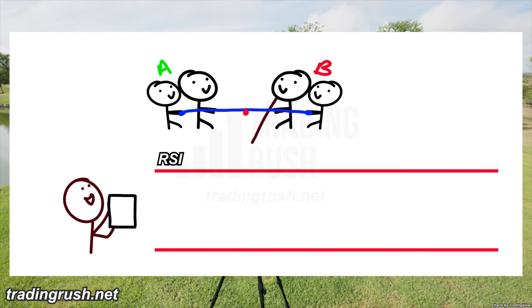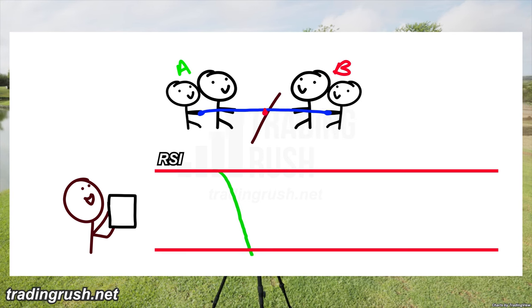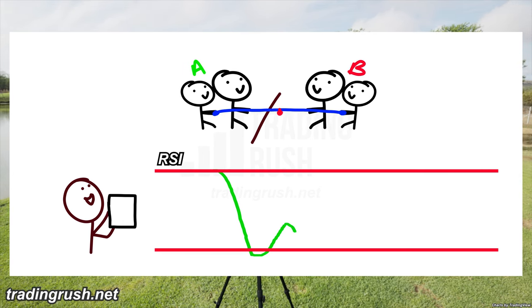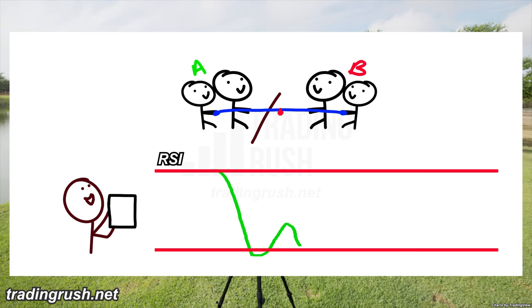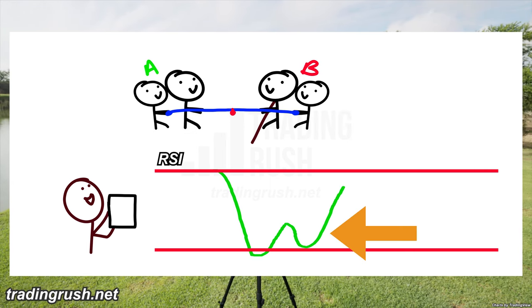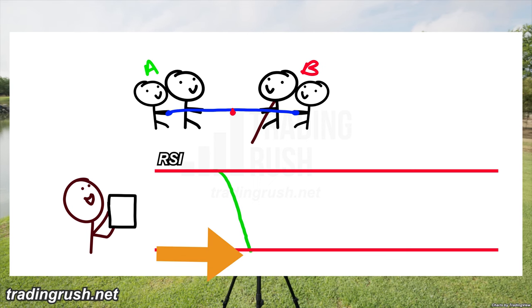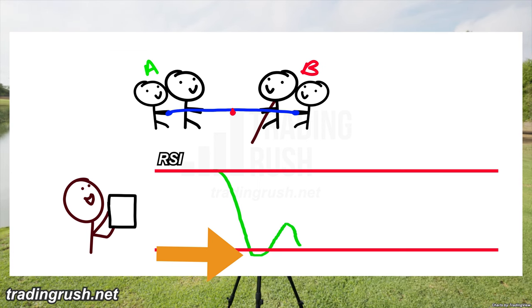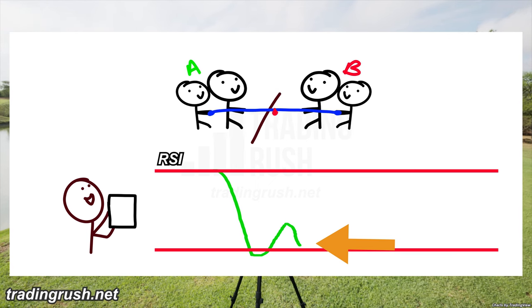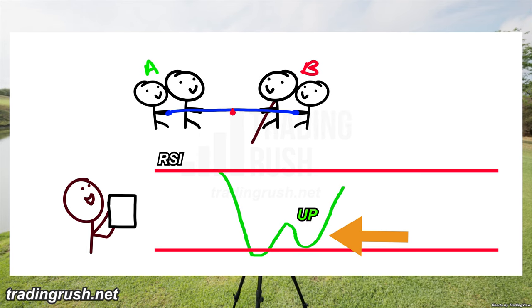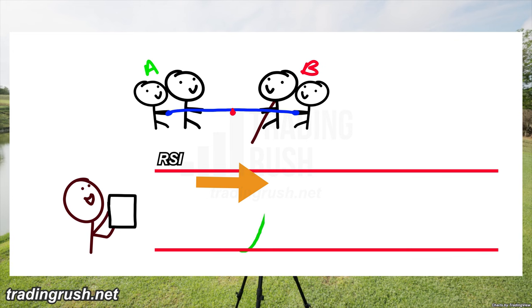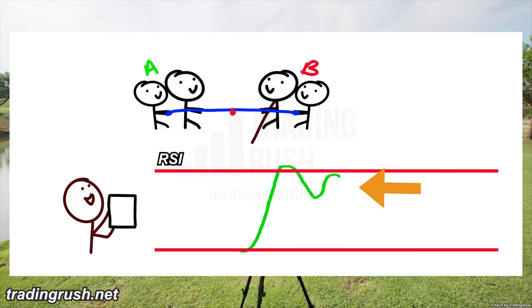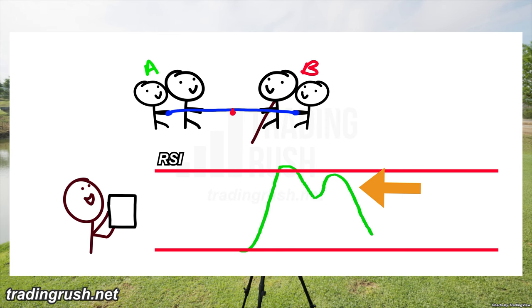Strategy number two. In our tug-of-war game, Team B pulls Team A towards them, but then Team A fights back. Team B pulls again, but this time can't pull Team A as far as before. The RSI creator said this is a really important pattern: when the RSI goes into the oversold zone and swings back, then tries to go back into the oversold zone but can't go as far, and then swings back up — that's a strong signal the price could go up. The same applies in reverse: if RSI enters overbought, retreats, tries again but doesn't reach as high, and reverses — that signals the price might go down.